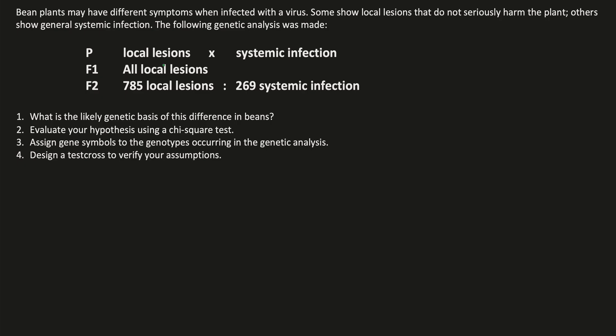We're going to use the chi-square test to figure out whether our hypothesis about the genetic basis in beans when they're crossed is true or not. Bean plants may have different symptoms when infected with this virus — these symptoms are the phenotype that we're looking for. Some show local lesions that do not seriously harm the plant, while others show a systemic infection. The following genetic analysis was made.